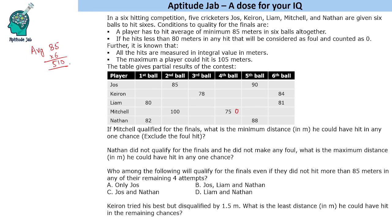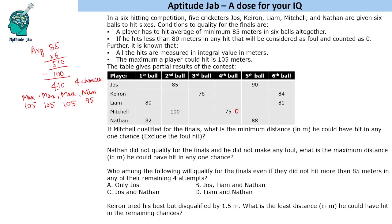So in four remaining turns, he has to get 410. To find the minimum he could have hit in one turn, we maximize the other three turns. Maximum is 105 each, so 105 × 3 = 315. He needs 410 total, so the minimum hit is 410 − 315 = 95 meters.